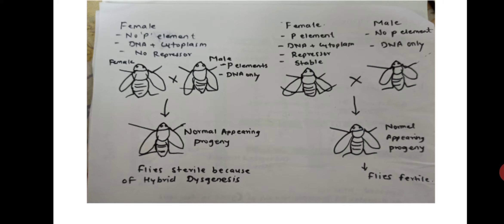Hybrid dysgenesis may manifest in many kinds of abnormalities — lacking a leg or a wing, or having mutant red eyes. In the second case, the female has a P element with DNA plus cytoplasm and also has a repressor, making it a highly stable female. The male has no P element, only DNA. The progeny of these two appears normal and is fertile, because the P element present in the female carries the repressor, so the progeny appears normal and fertile.